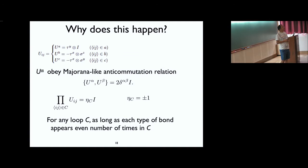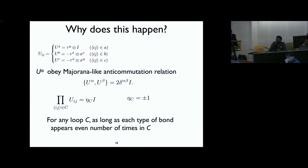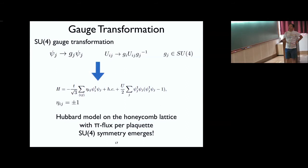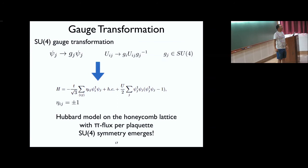Question: Is there a conserved current corresponding to the SU(4) symmetry? Answer: As long as we have SU(4) symmetry, there should be at least approximately conserved SU(4) charges. However, because we need a gauge transformation to make the SU(4) symmetry apparent, when you go back to the original Hamiltonian the SU(4) charge becomes something mixed and involved — but there should be approximately conserved charges. Thank you very much.